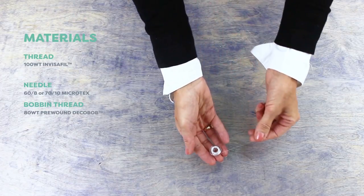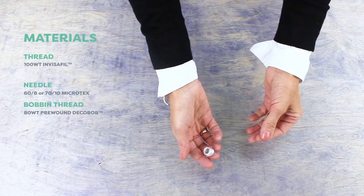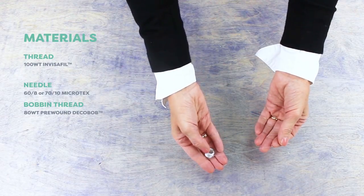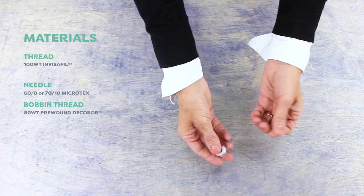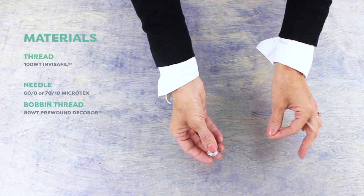Finally, I'm going to use a bobbin that's been pre-wound with DecoBob thread. This is an 80 weight poly thread that comes already pre-wound on a plastic sided bobbin which will pair well with the top thread.